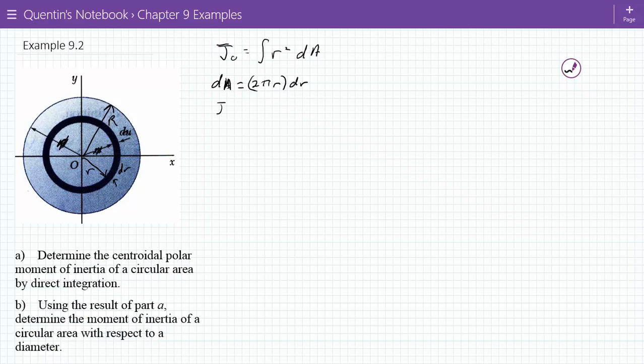Okay, so therefore J0 is integral from what to what? In this case, it's from 0 to big R. We're going from here all the way out to there. So it's integral from 0 to R of r squared dA, and in this case dA is 2 pi r dr. So it's integral from 0 to R of 2 pi r cubed dr.